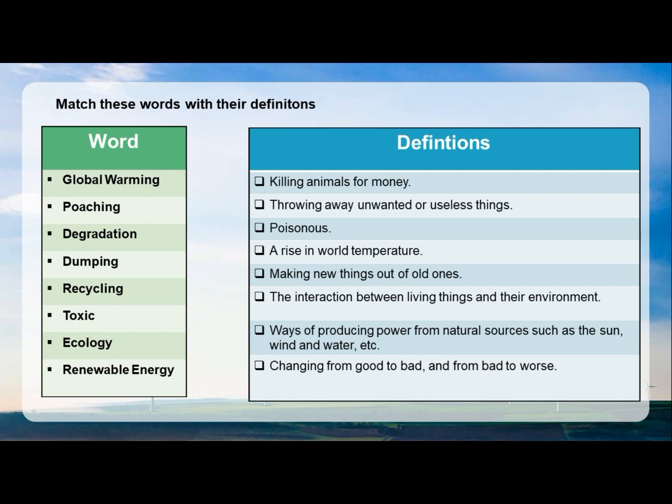The first one: global warming — it's a rise in world temperature. The second one: poaching — it's the fact of killing animals for money, especially for their skin, ivory, etc.